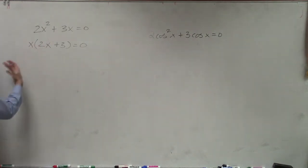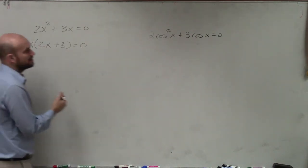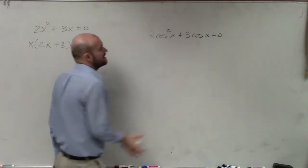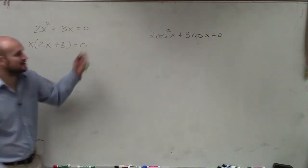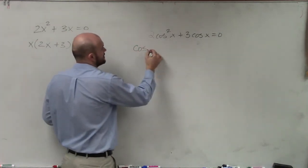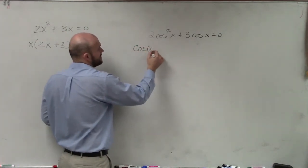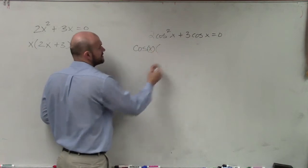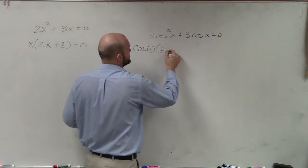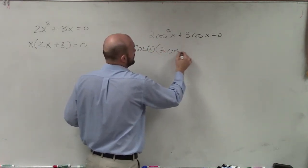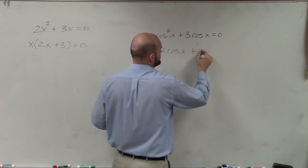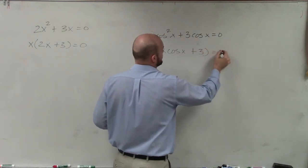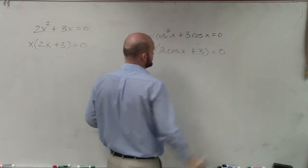Then I could solve this by using the zero product property. Looking at this equation, instead of an x, I can factor out a cosine of x. So if I factor out cosine of x, I'm left with cosine of x times 2 cosine of x plus 3 equals 0.